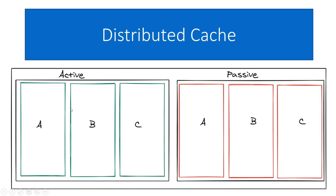It might seem wasteful because the active and passive servers are identical and under ideal conditions the passive servers never actually do anything — best case you never need your backups. But the reason you have them is that if your cache goes down, all those queries suddenly hit your database. If your system is built assuming that, say, 90% of requests are served from cache, and the cache goes down, your database will be overwhelmed by that traffic volume.